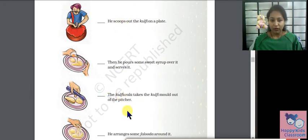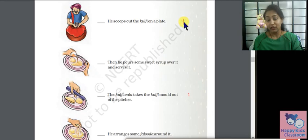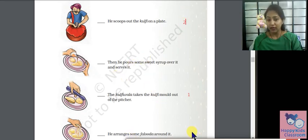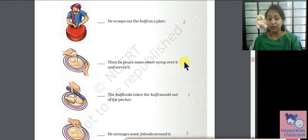First, what do you do? The kulfi wala takes the kulfi mold out of the pitcher — that is number 1. He scoops out the kulfi on the plate — that is number 2. Then he pours some sweet syrup over it and serves it — that comes next in the sequence.